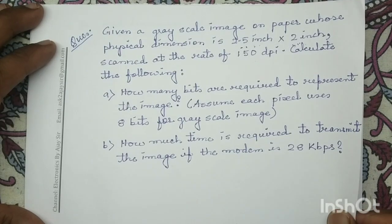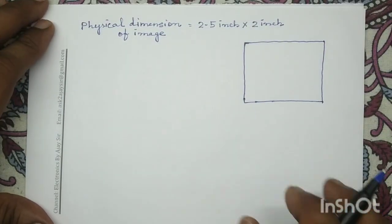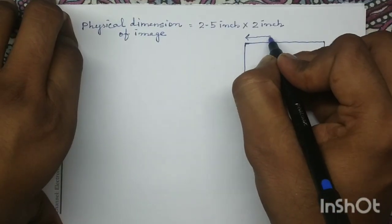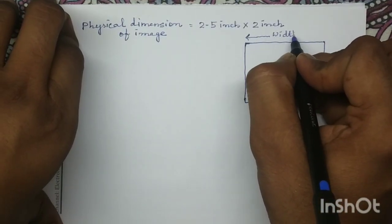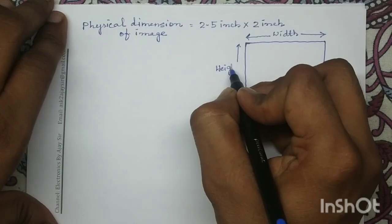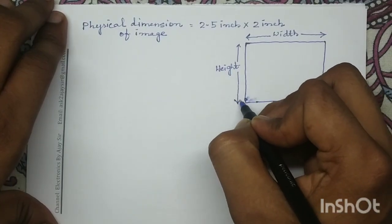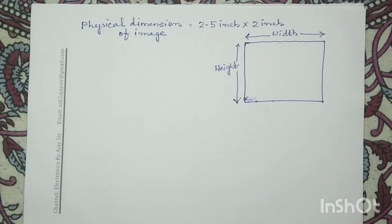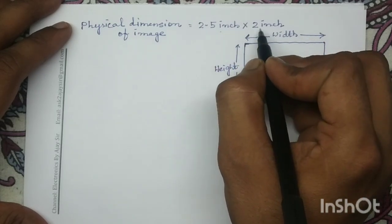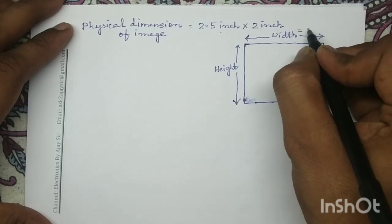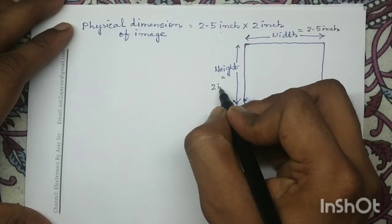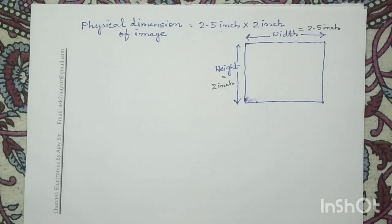The physical dimension of the image is 2.5 inch cross 2 inch. In photography, this side represents the width and this side represents the height. In terms of physical dimension, 2.5 inch represents the width and 2 inch represents the height. So width equals 2.5 inch and height equals 2 inch.